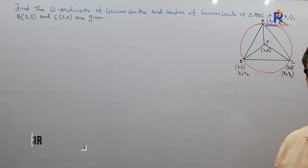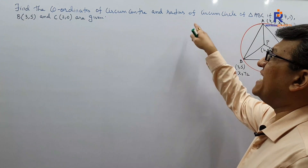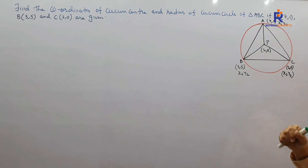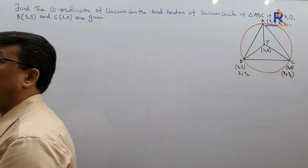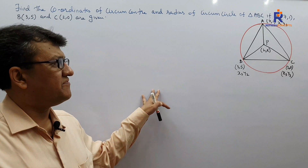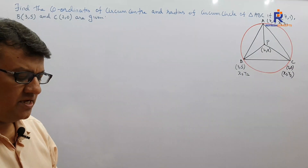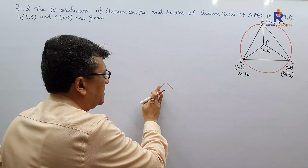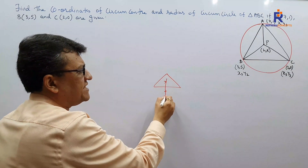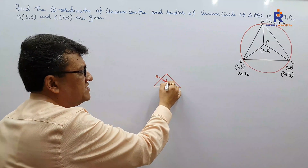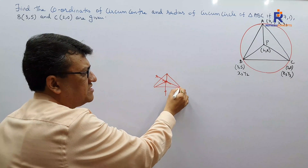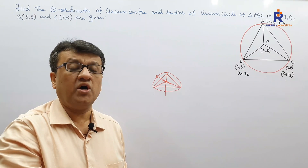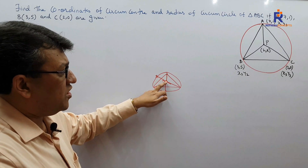Here is an interesting problem: find the coordinates of the circumcenter and the radius of the circumcircle of triangle ABC, given A(7,1), B(3,5), and C(2,0). This concept is about drawing a circumcircle. To refresh — for construction of a circumcircle, we draw a triangle, then perpendicular bisectors of its sides. Their intersection is the circumcenter, and the distance from the circumcenter to any vertex is the circumradius.